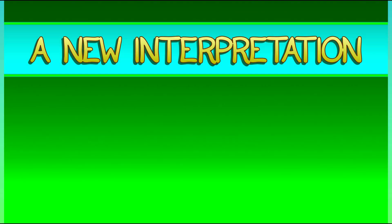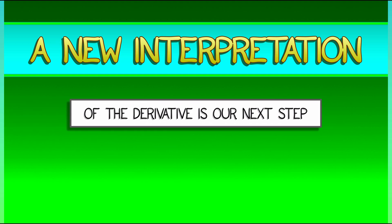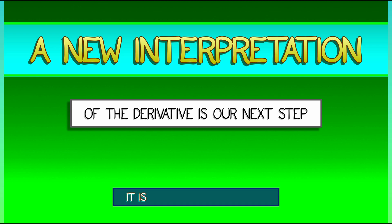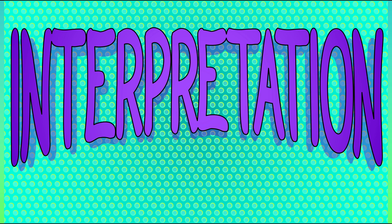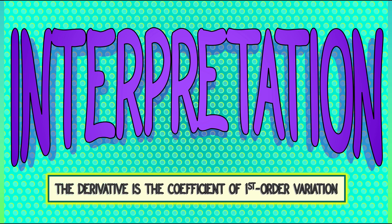Our next step is to look at a new interpretation for the derivative. We've reviewed the definition, and we've reviewed the interpretation in terms of slope. But our next interpretation is based on asymptotics. The derivative is the coefficient of first-order variation.